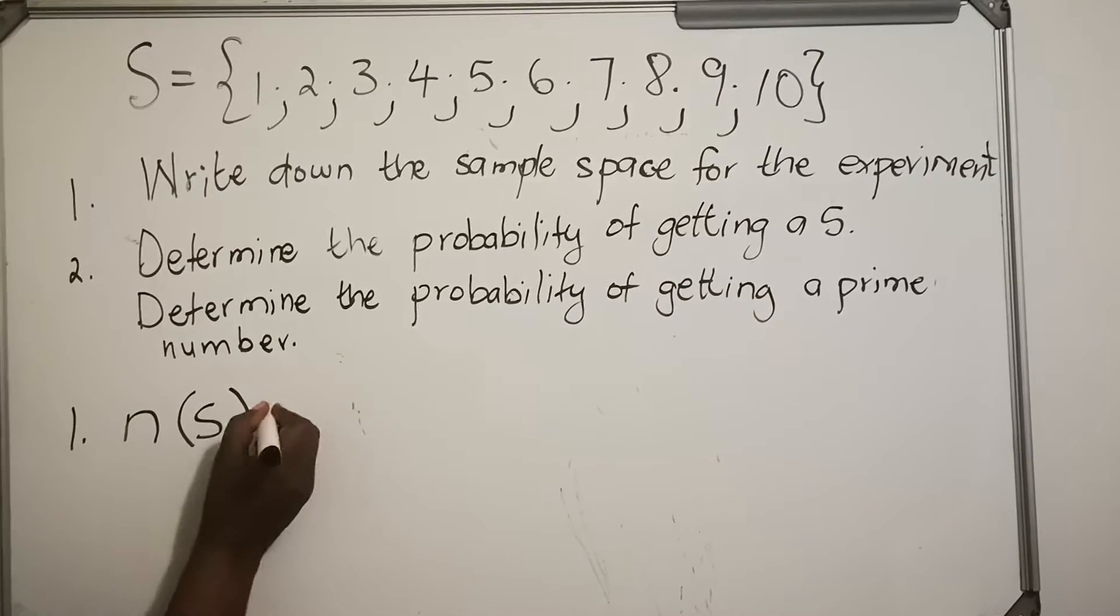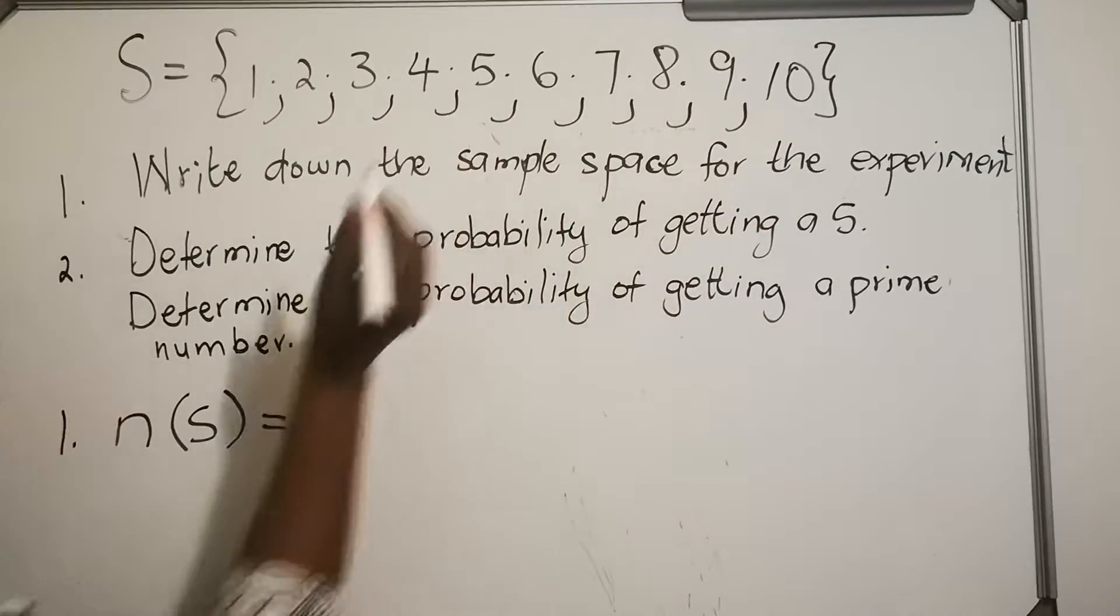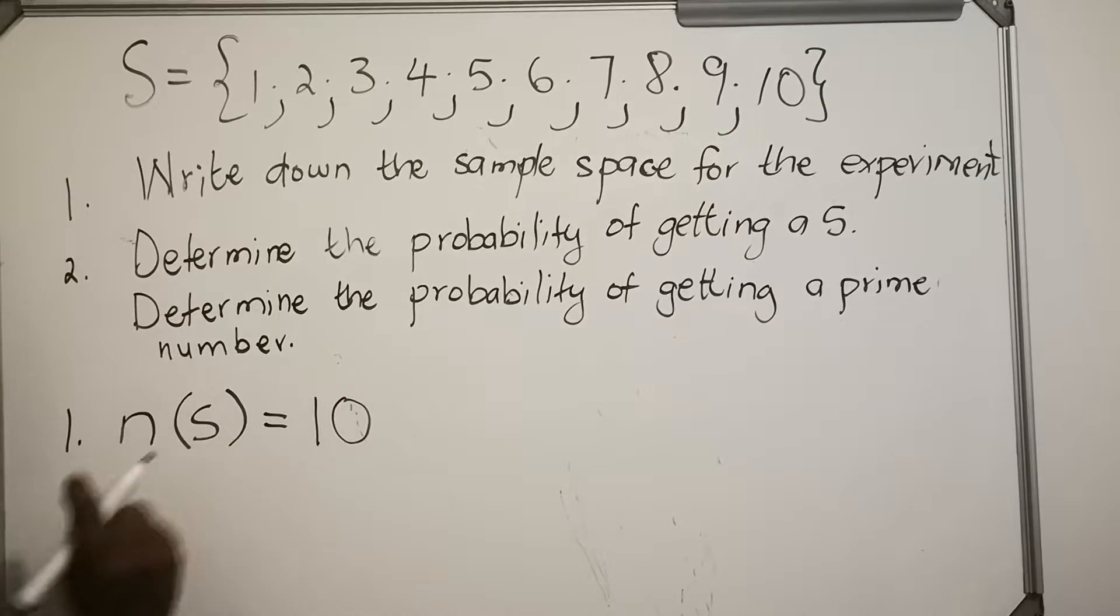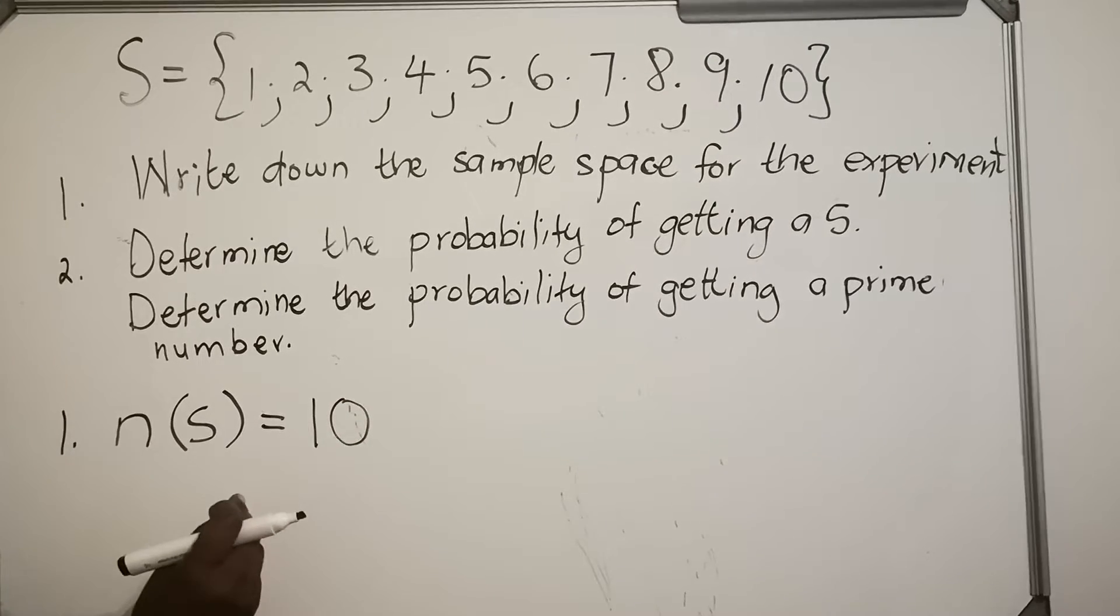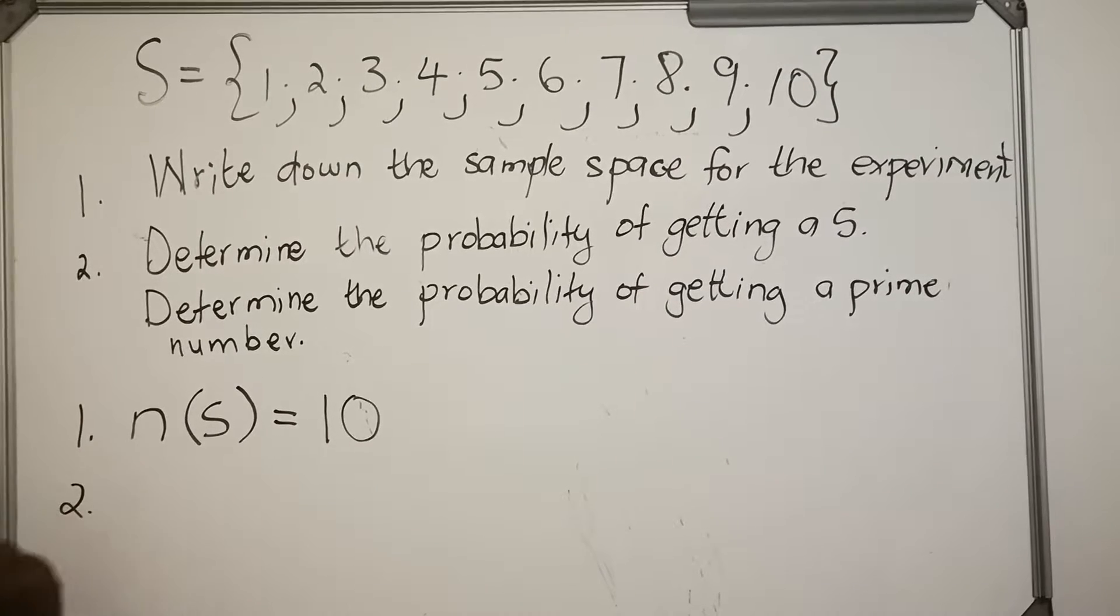Then you count how many they are: 1, 2, 3, 4, 5, 6, 7, 8, 9, 10. So it means in my sample space I have 10 possible outcomes. The second one says determine the probability of getting a 5.